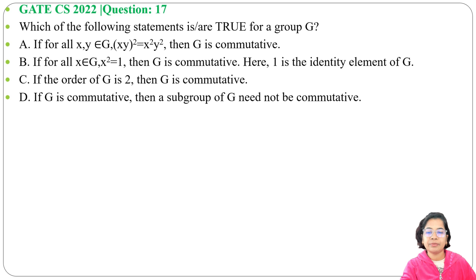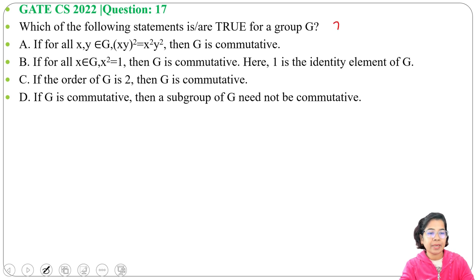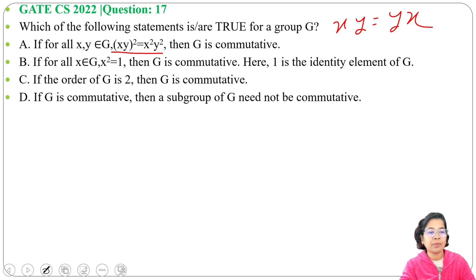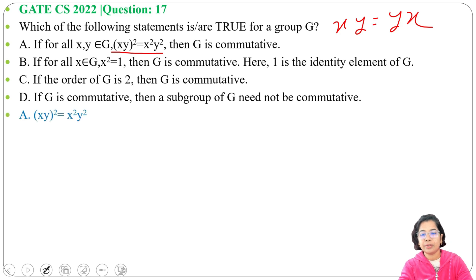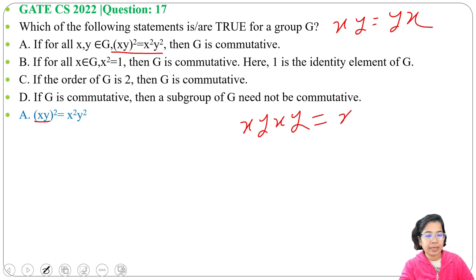Option A: if for all x, y belonging to G, (xy)² equals x²y², then G is commutative. For commutativity, xy should equal yx. So from this condition we need to derive xy equals yx. Here it's given (xy)² equals x²y², so (xy)² can be written as xy·xy, and x²y² can be written as xx·yy.